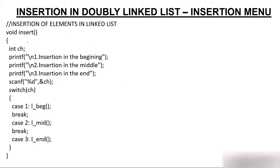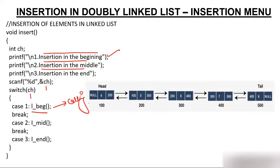Inside the insert function, there is another menu — just like when you order chicken you have roasted, fried, or gravy options. Similarly in insert you have different options: insert at the beginning, insert at the middle, or insert at the end. If you press 1 for beginning, the switch will have value 1, and in case 1 we call a function for inserting at the beginning.